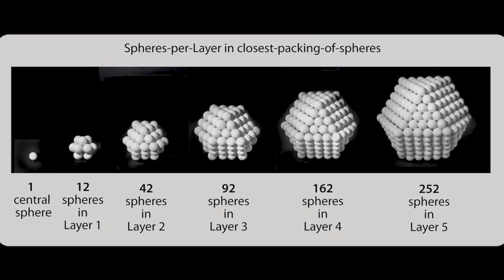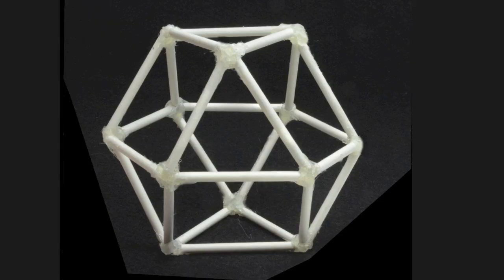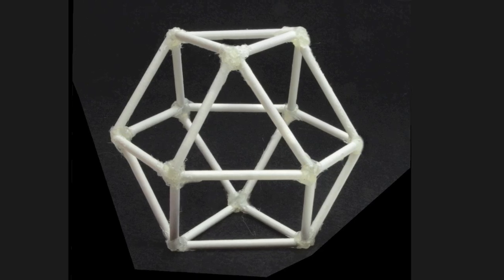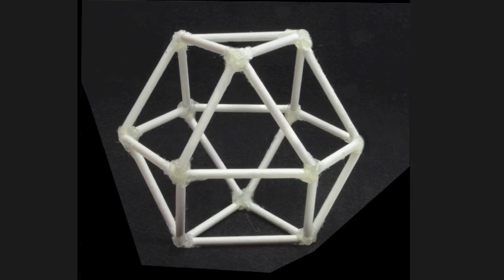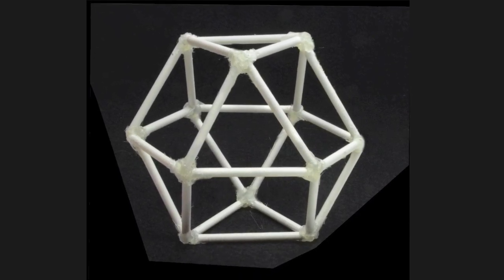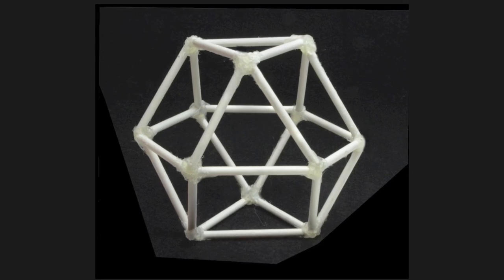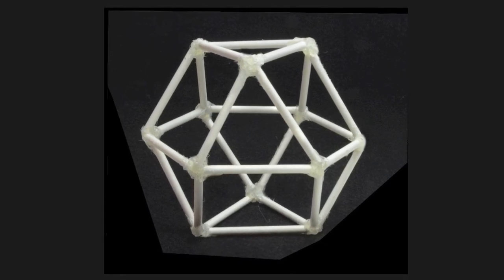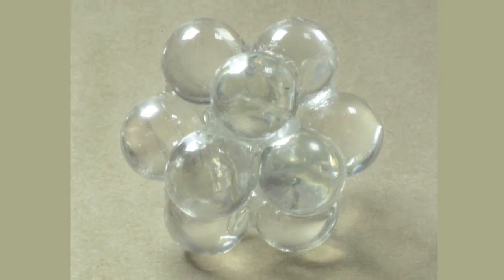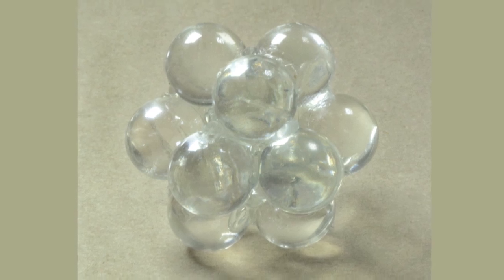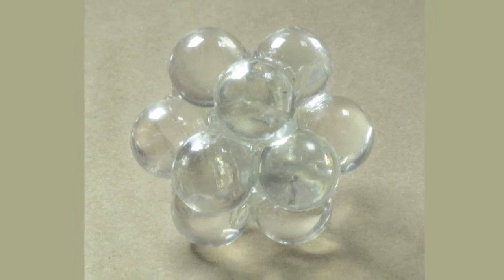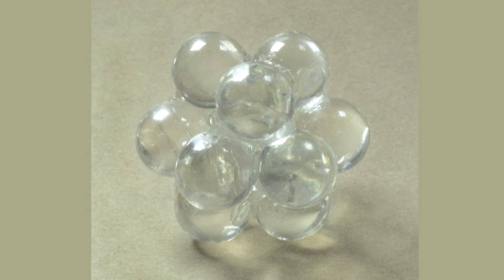Bucky saw the cube octahedron not as a shape made from faces, but as an energy event made from vectors. The eight triangular and six square faces that make up this shape are important, but the 24 vectors connecting the 12 vertices are even more important. That's why in this kit we'll make the cube octahedron from vectors, or lollipop sticks, and also out of spheres, marbles.